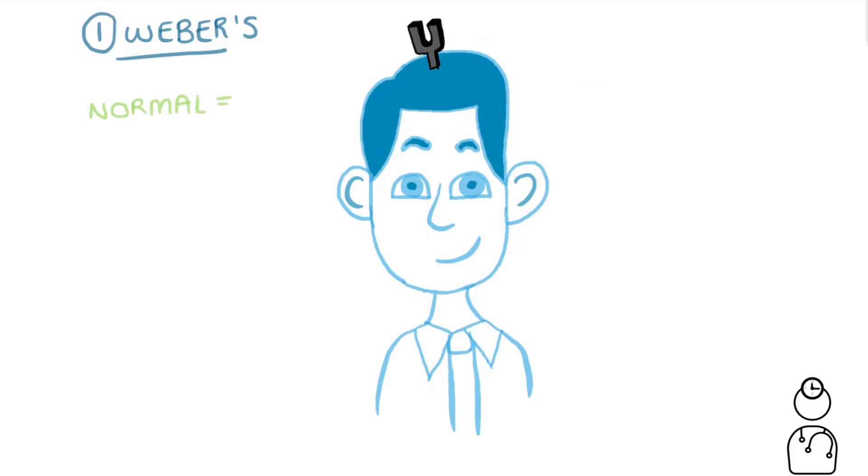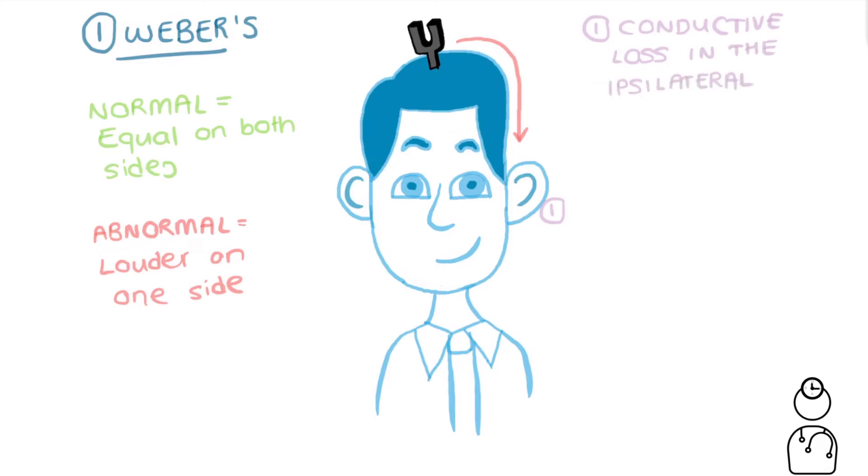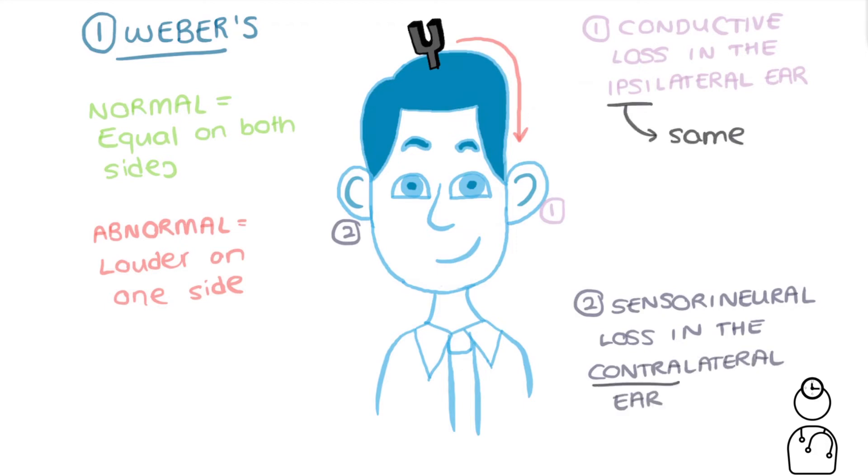Now normally the sound should be equal in both ears, however if there is an abnormality in any of the ears the sound will lateralize. This can mean one of two things: either there is a conductive hearing loss in the ipsilateral ear or there's a sensorineural hearing loss in the contralateral ear. Ipsilateral just means the same and contralateral means the other.